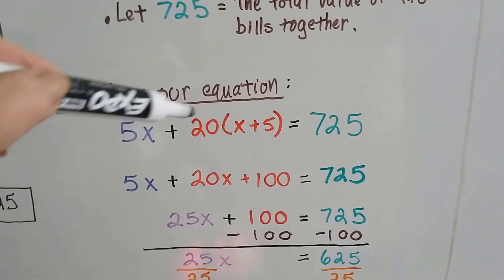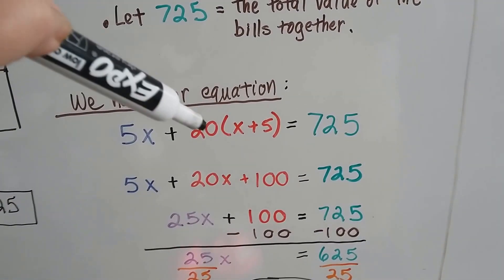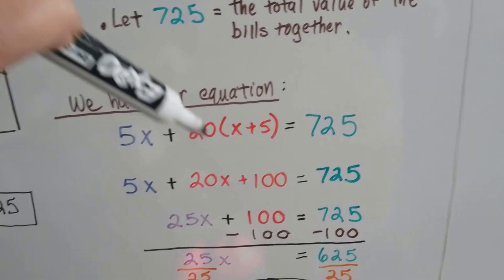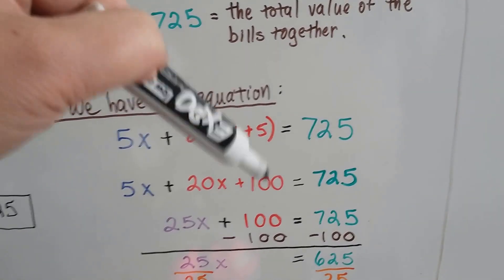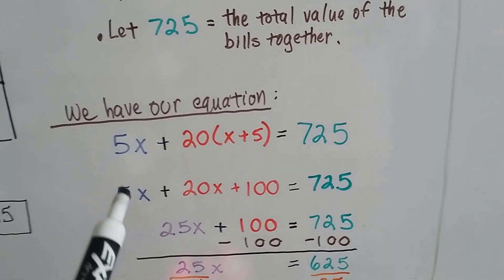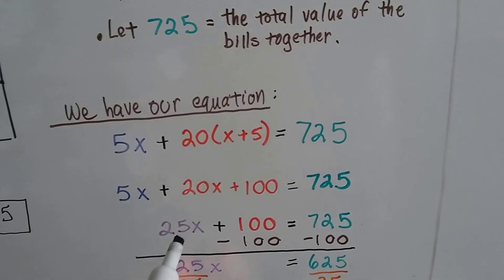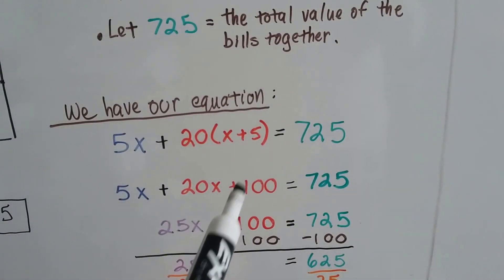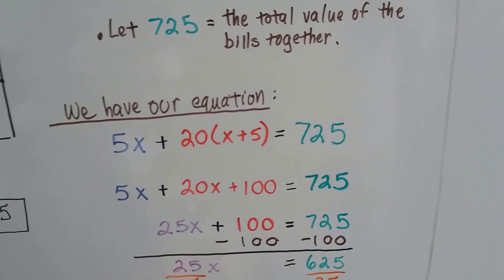We have to do distributive property here. We're going to do 20 times X is 20X and 20 times 5 is 100. Now, we can combine like terms. We've got a 5X and a 20X, that makes 25X. And it's plus 100 equals the 725.